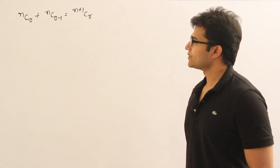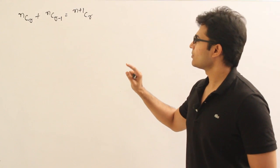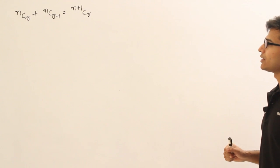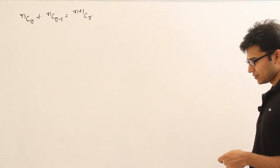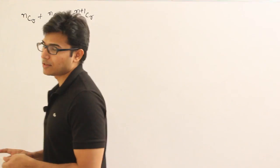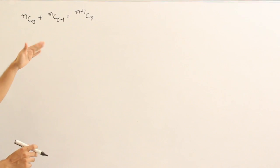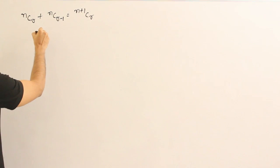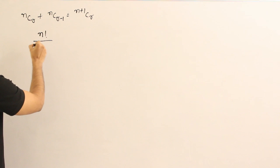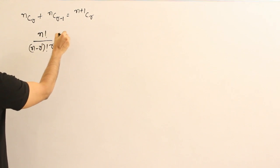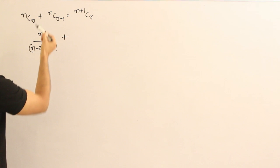The next important property is nCr + nC(r-1) = (n+1)Cr. Let's see how it is true by taking the left hand side and expanding the terms to show it equals the right hand side. nCr is n factorial divided by (n minus r) factorial into r factorial, plus the next term nC(r-1).